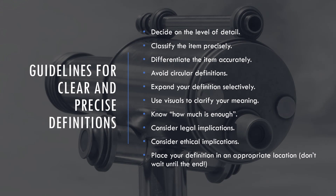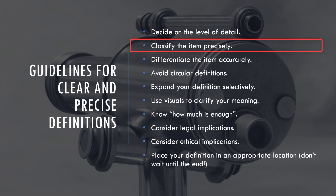Now, some guidelines for clear and precise definitions. First, decide on the level of detail by putting yourself in the place of your audience — what level of detail is appropriate for them? Next, classify the item precisely. For example, you should never say 'a dog is a hound' — all hounds are dogs, but not all dogs are hounds. Switch it around: 'a hound is a dog,' then continue with your sentence definition. Be careful with your classifications.